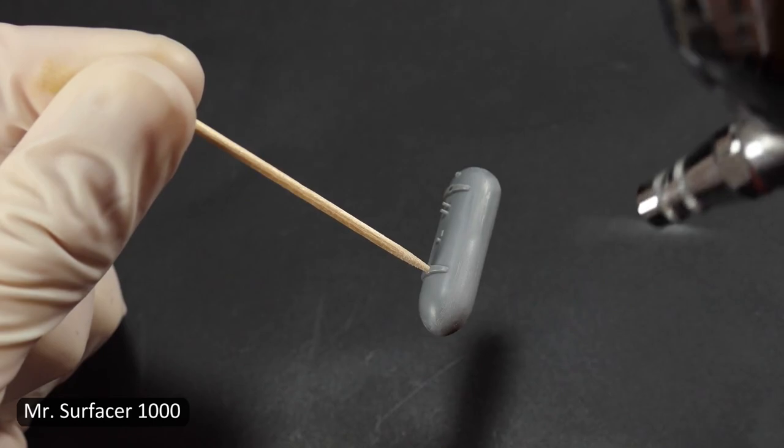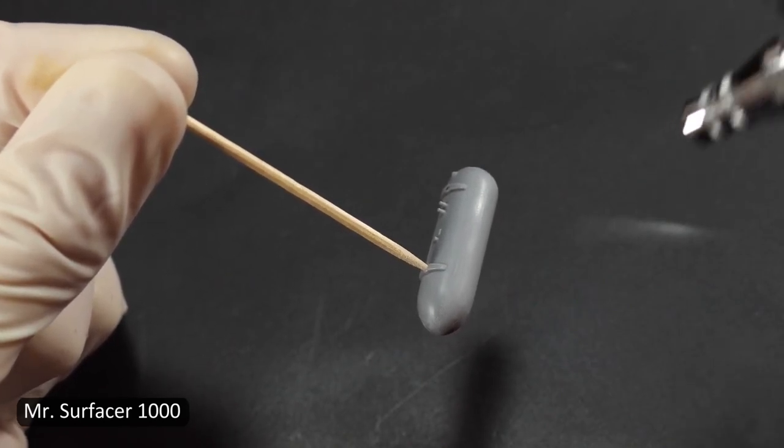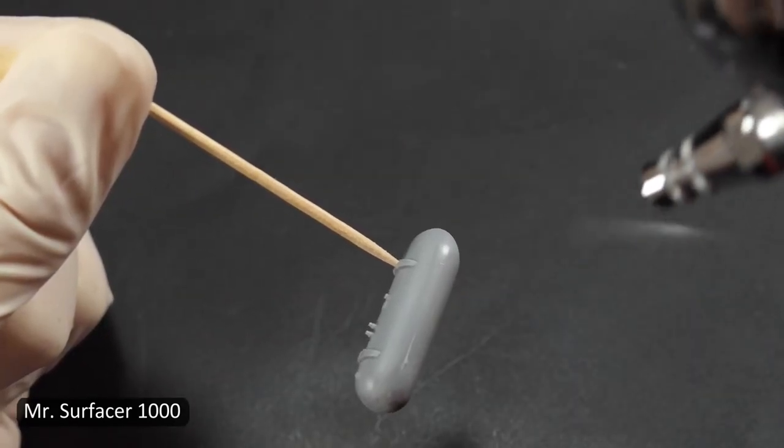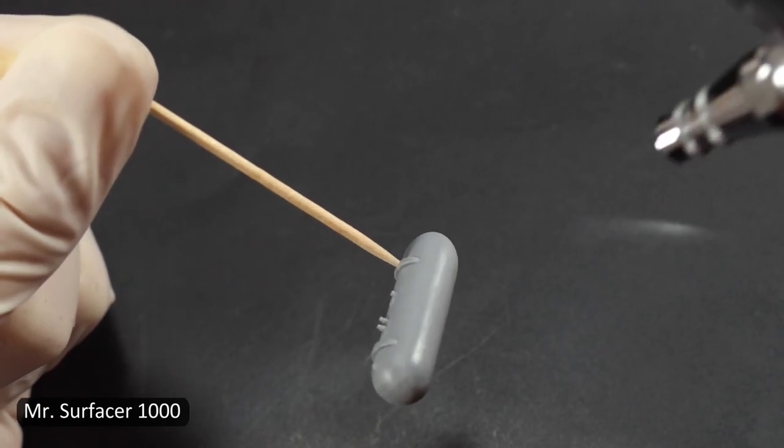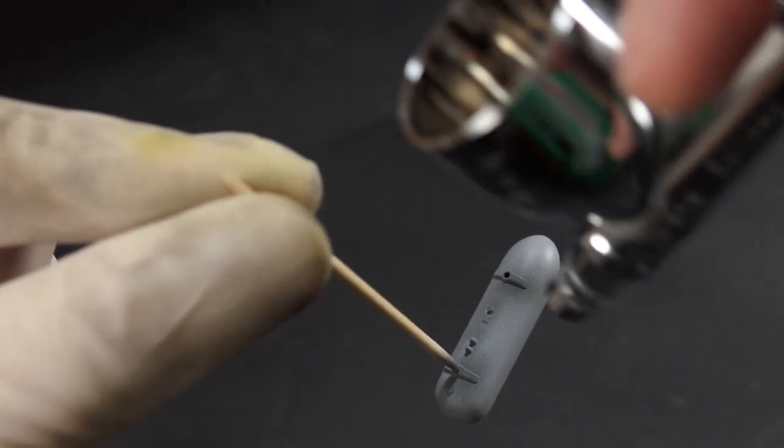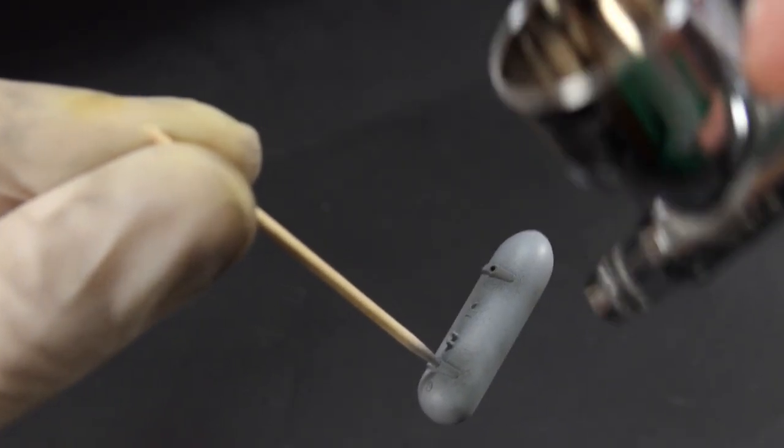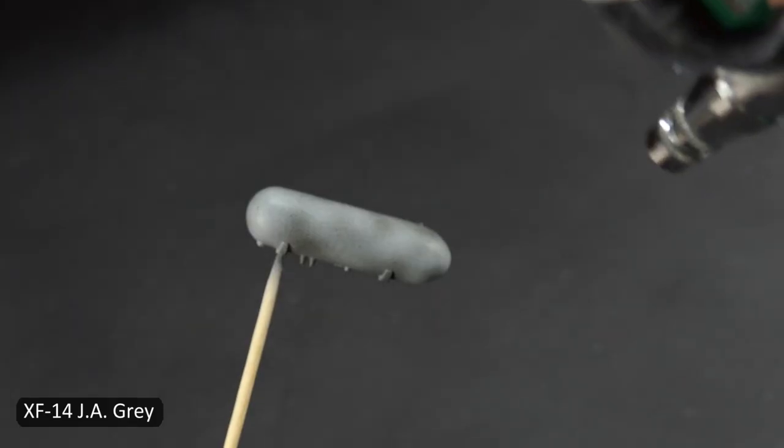At this point I've already puttied and sanded the seam line on the drop tanks before spraying it with Mr. Surfacer. Next I'll do a little bit of random pre-shading with black, followed by a base coat of this Japanese Army Grey, which seems a lot more green than grey.